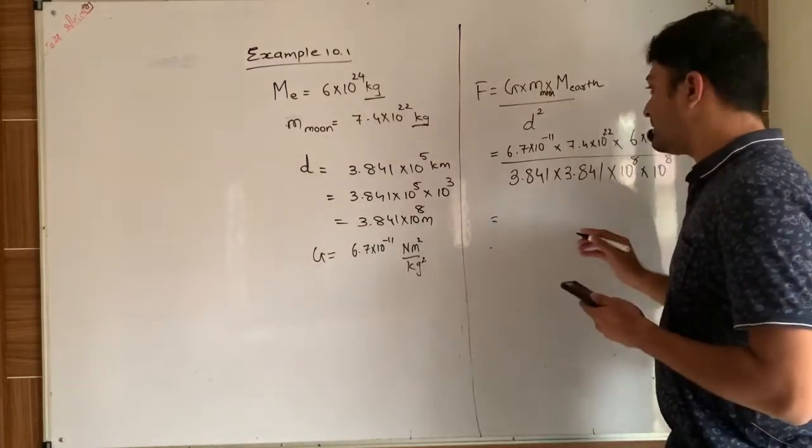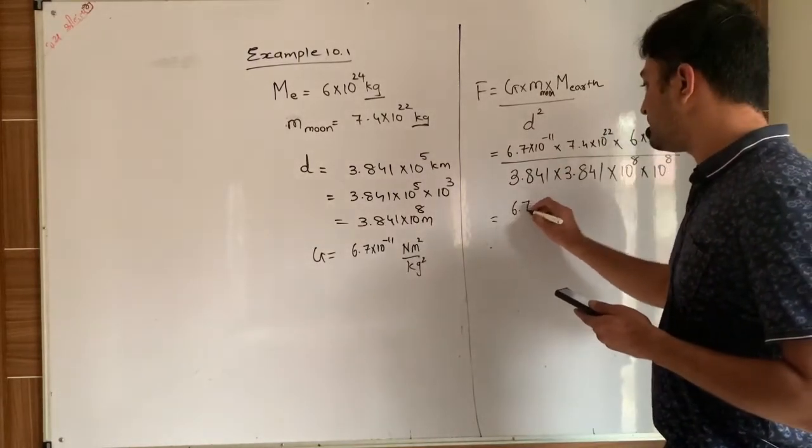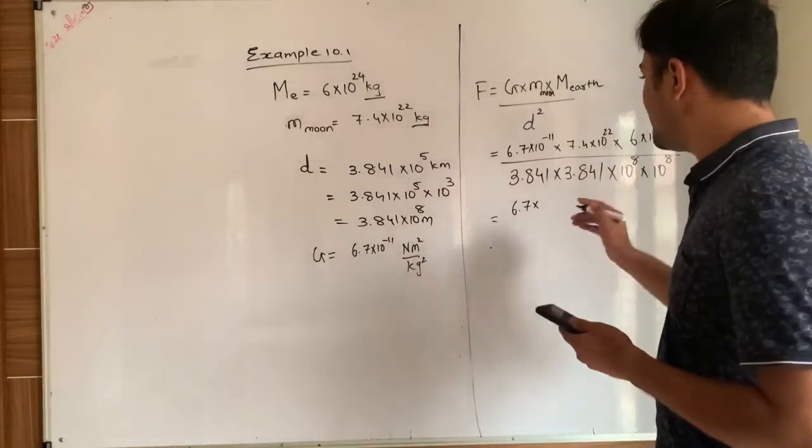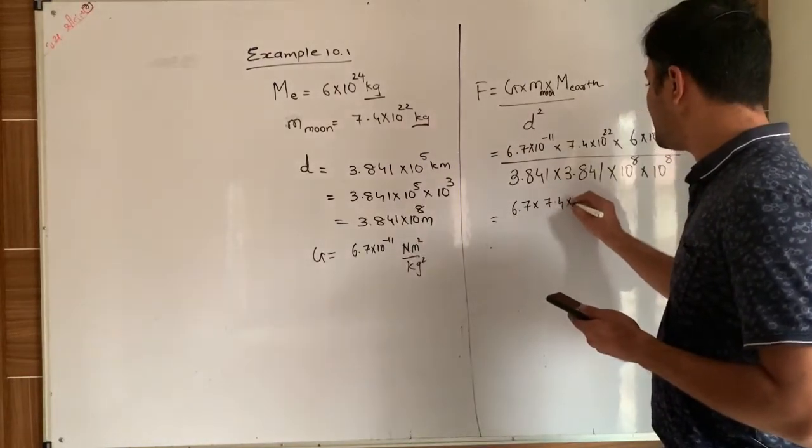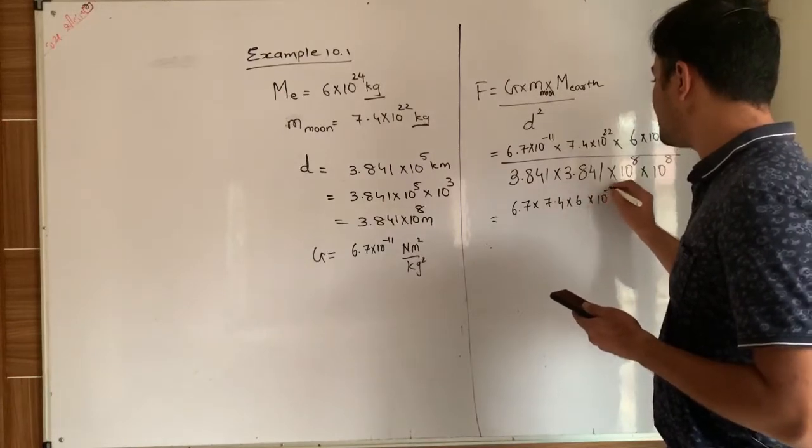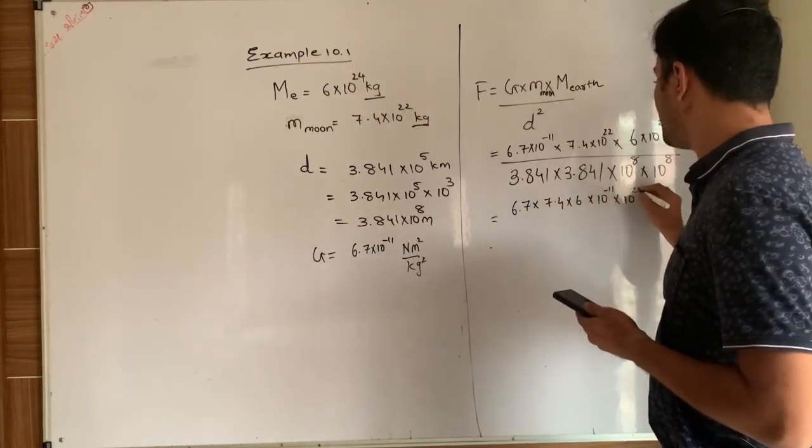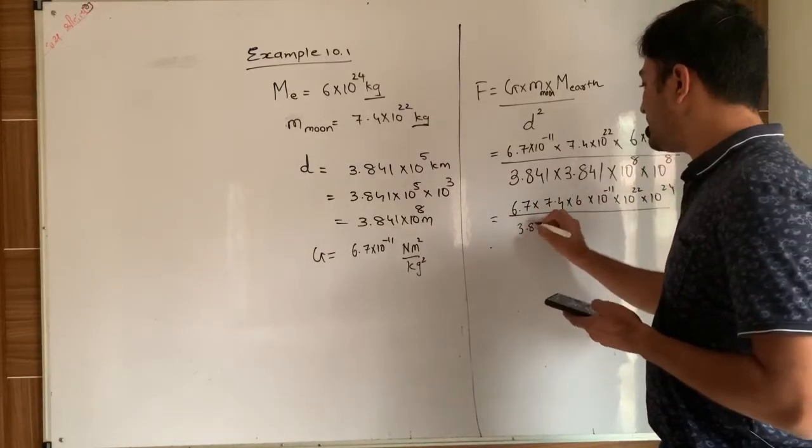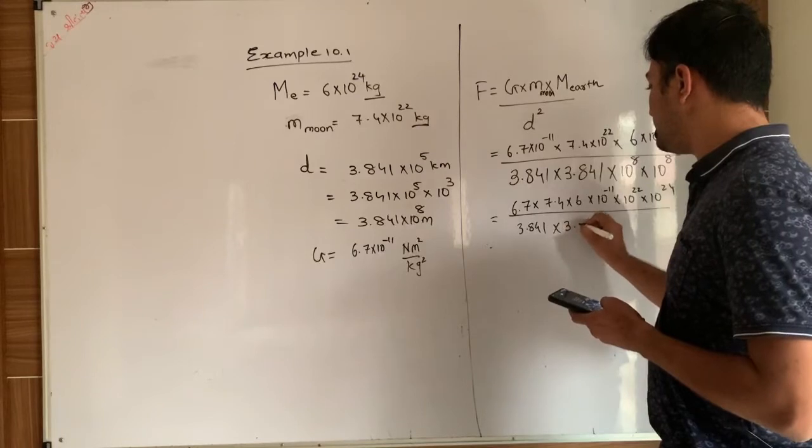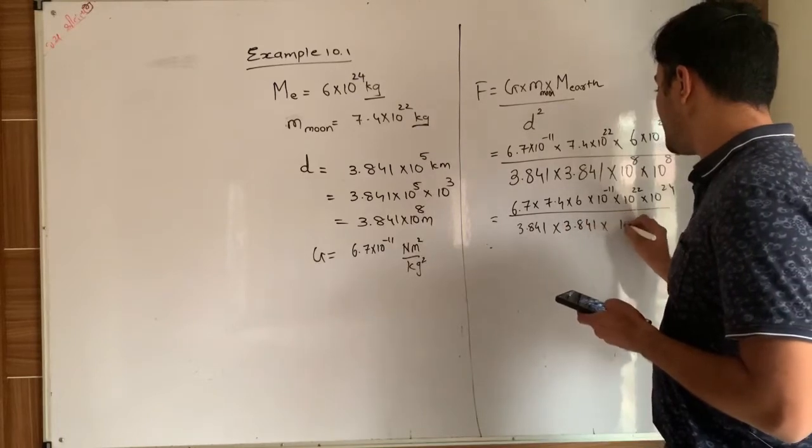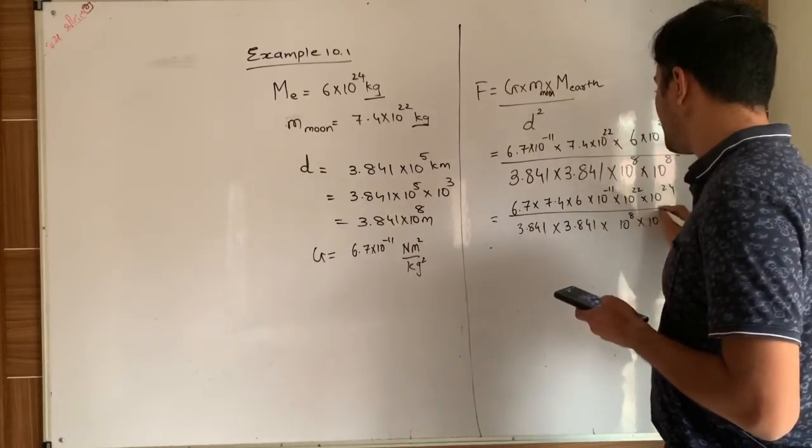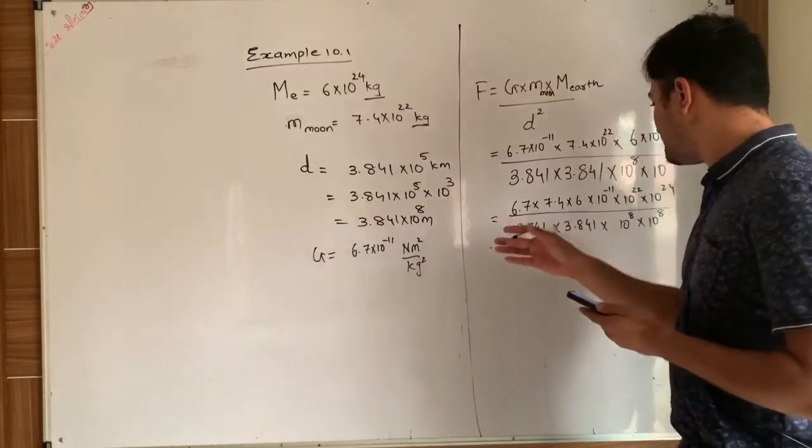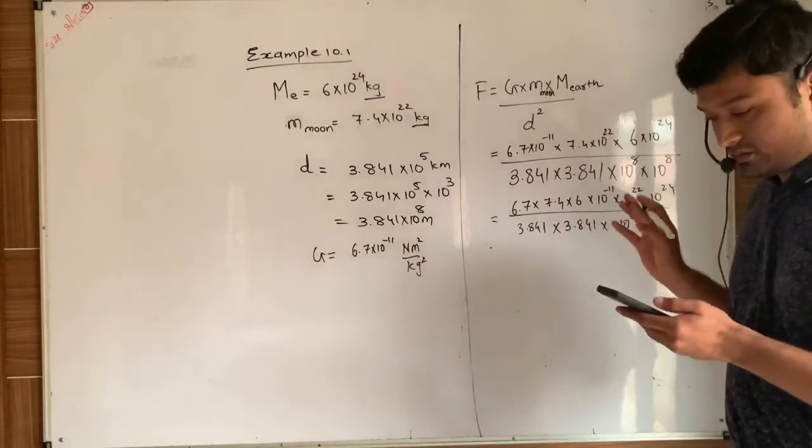So now we will proceed with the calculation. First of all we will separate all the numbers that is to be multiplied and all the power numbers. So 6.7 into 7.4 into 6 into 10 raise to minus 11 into 10 raise to 22 into 10 raise to 24 whole divided by 3.84 into 3.84 into 10 raise to power 8 into 10 raise to power 8. So what I have done, I have just separated the numbers with power.